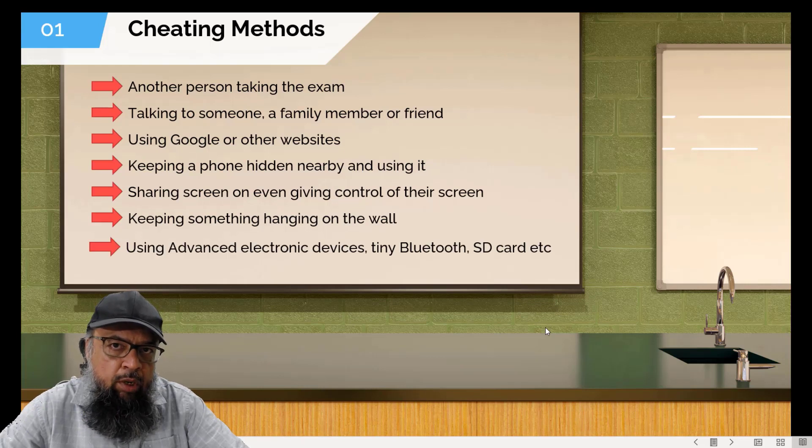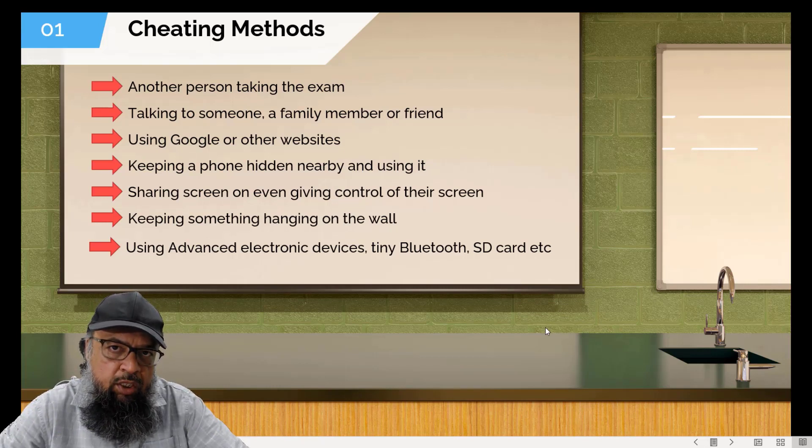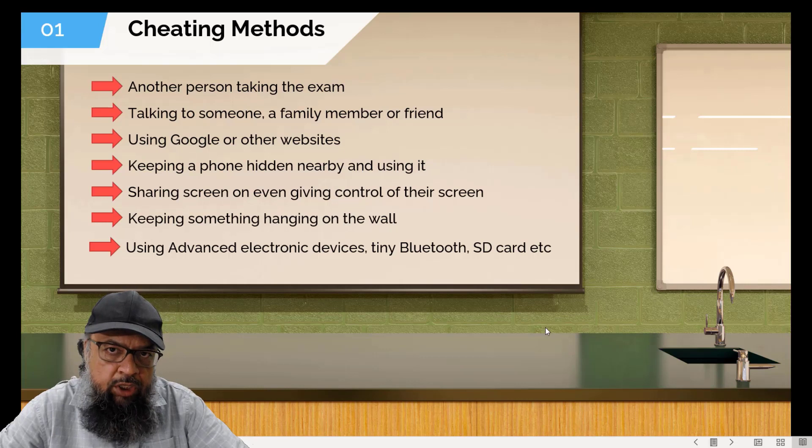Another very popular method is that they use some advanced electronic devices, such as tiny Bluetooth devices, and then they connect that device to their phone and communicate. Similarly, they try to use SD cards, USBs, and very small USBs can be easily camouflaged when the human proctor is examining the environment of the student.